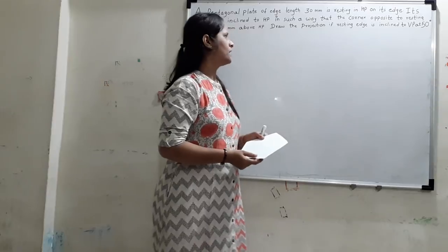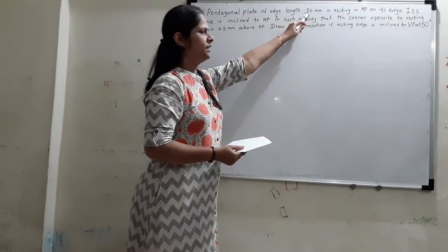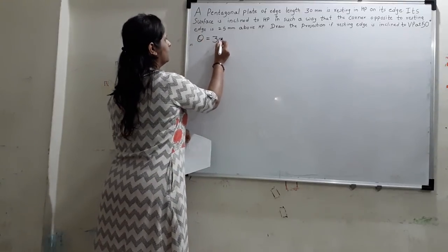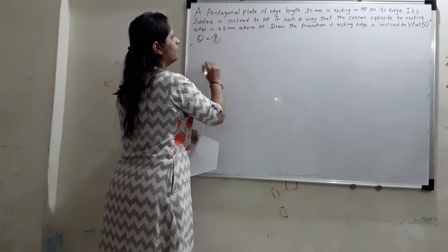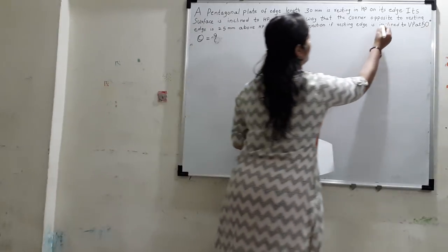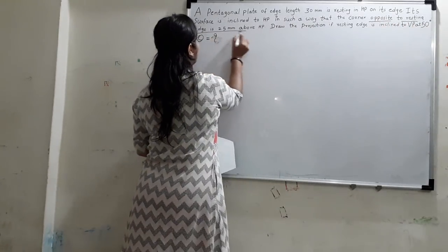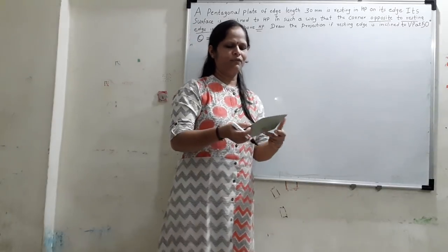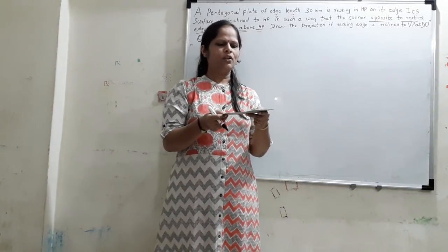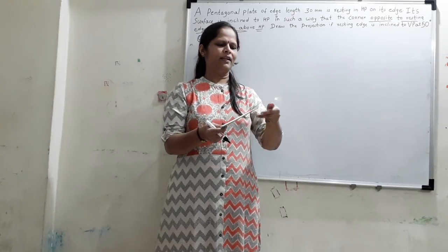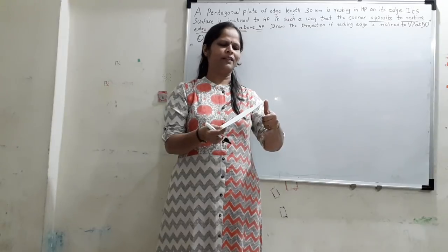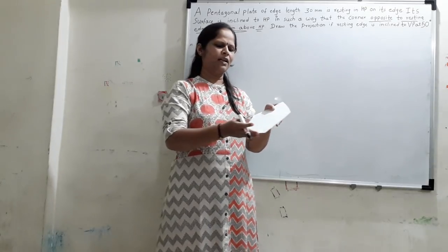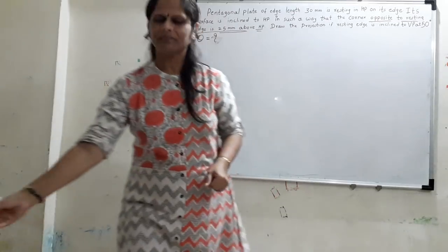We will read the problem first. The plate dimension is 30 mm edge length and the surface is inclined to HP. Theta is not given in this problem, so we have to find theta. What is given is that the corner opposite to the resting edge is 25 mm above HP. Then we will solve the last condition: the resting edge makes an angle of 50 degrees with VP.